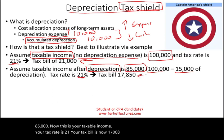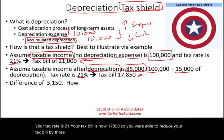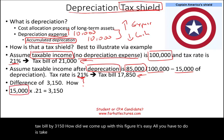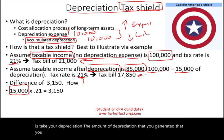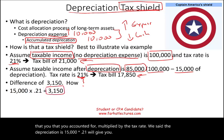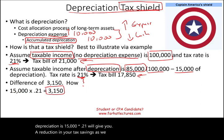You were able to reduce your tax bill by $3,150. How? Take your depreciation amount — $15,000 — and multiply it by the tax rate of 0.21, which gives you a tax savings of $3,150.